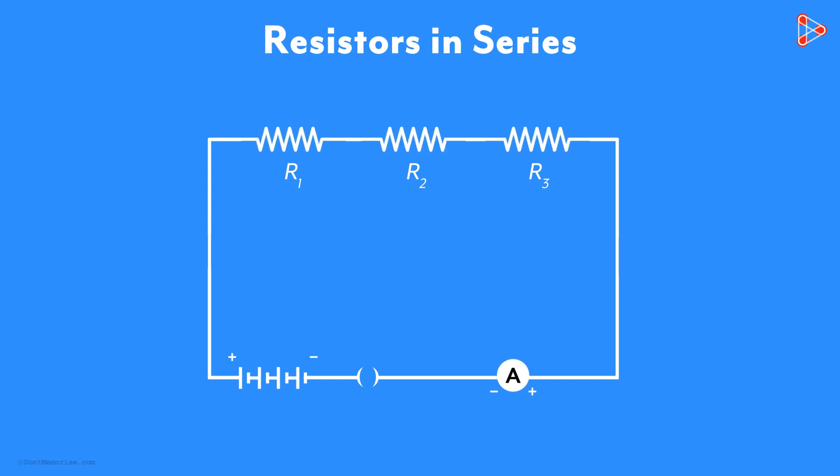Let's perform a small activity now. Close the plug key and note the ammeter reading with these three resistors connected in series. Let it be I amperes.